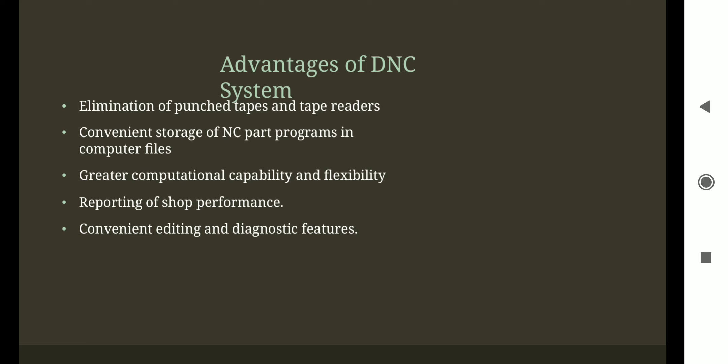Third advantage is greater computational capability and flexibility. With a single server computer and different machines connected through communication lines, we can communicate with any NC tools, giving great flexibility for manufacturing — no need to run from machine to machine, it is simple and straightforward. Fourth is reporting of shop performance — we can collect data, process data, and report the data. The data is reported by the machine tool to the computer with the help of telecommunication lines, allowing reporting of shop performance. This is only possible with the DNC system, not with NC or CNC systems.